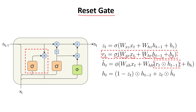What you do with this value is multiply it element-wise with the previous hidden state. As we said earlier, this is quite similar to the forget gate in the long short-term memory cell.